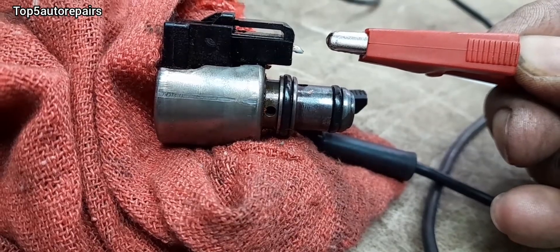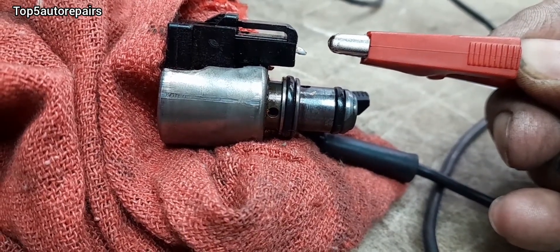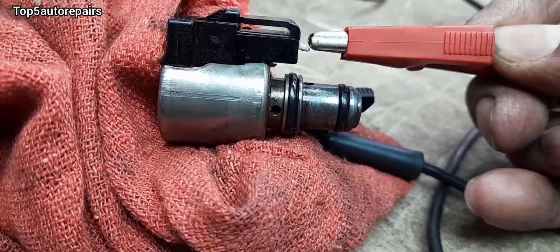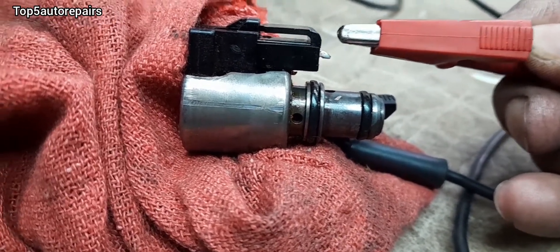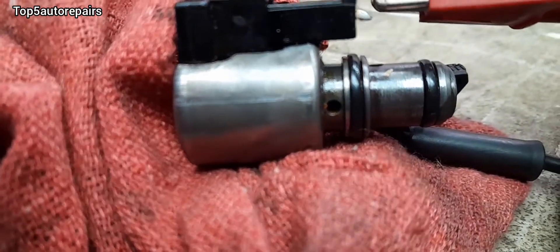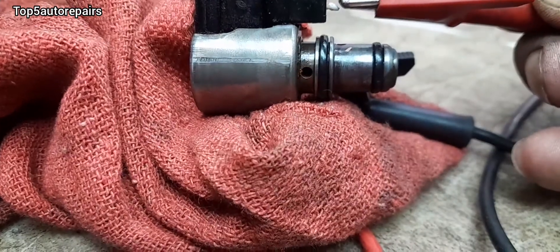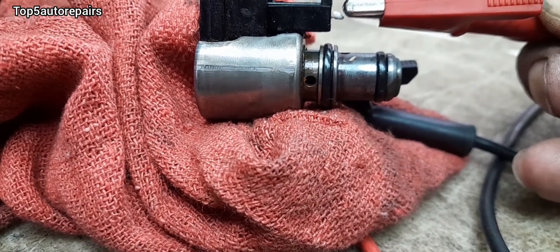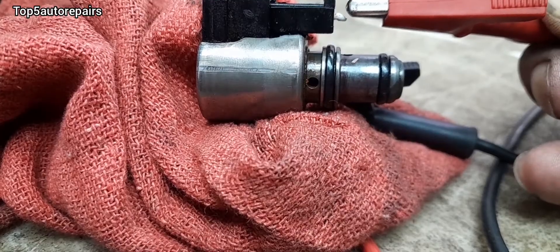How do you test for a bad TCC solenoid? You can always try to energize it by applying 12 volts and listen for a clicking noise. You can also look inside the hole and watch it plunge in and out. And that's one way to test for a bad TCC solenoid.